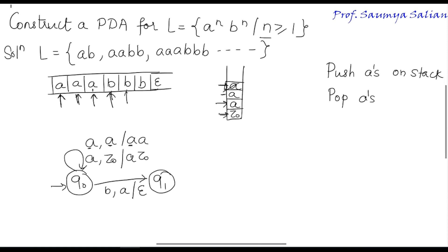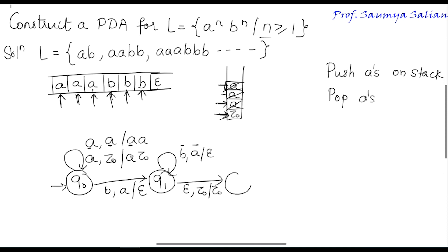Continuing — on reading each subsequent B with stack top A, I perform a pop operation, removing each A. Only when I read epsilon and my stack top is Z0, I perform a skip operation and reach the final state, wherein I have matched an equal number of A's and B's.